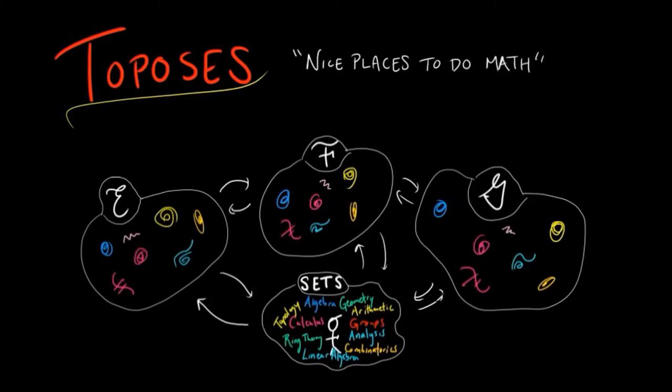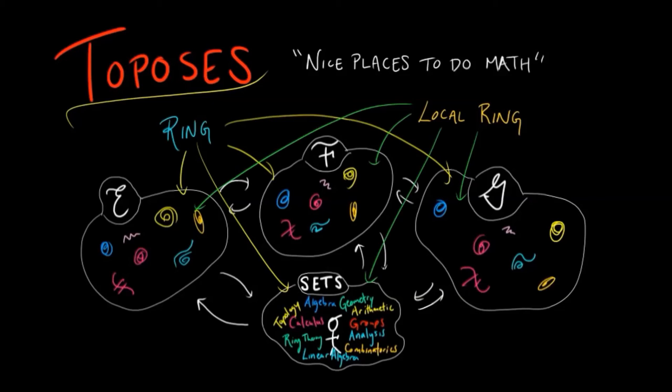To give you an example of how one uses toposes, consider the algebraic theory of unital commutative rings. Each topos has its own interpretation of this theory, with the interpretation in set being the one you come across in a normal abstract algebra class. Similarly, there is the theory of local unital commutative rings, which also has an interpretation in each topos.